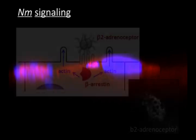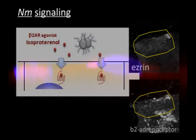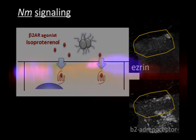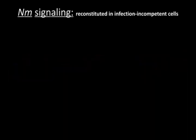Treatment of endothelial cells with an agonist for the beta-2 adrenoreceptor results in its internalisation. This results in the inhibition of beta-arrestin recruitment and of all the other proteins important for meningococcal signalling. We show that the beta-2 adrenoreceptor / beta-arrestin partnership is sufficient for meningococcal signalling.